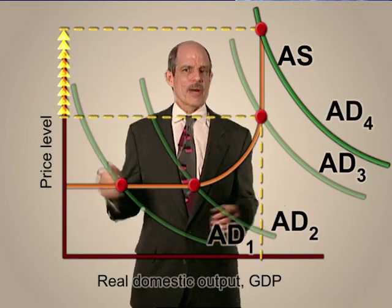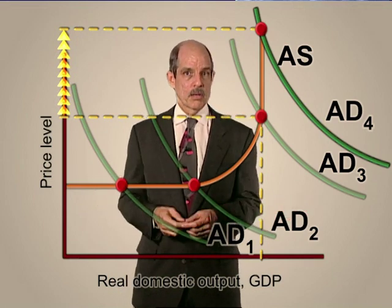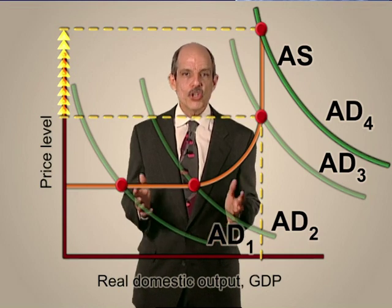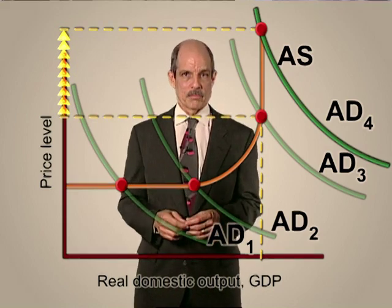Inflation. But you might scoff: all prices rise — shouldn't that just mean that everyone gets paid more, so everyone should be exactly as well off as before? Well, no. Because inflation doesn't affect everyone equally. While prices rise, income or wages may not rise as fast. So in real terms, workers may be worse off than they were before until those wages can catch up. But usually there's a lag, and in the meantime they may not be keeping up their real purchasing power.